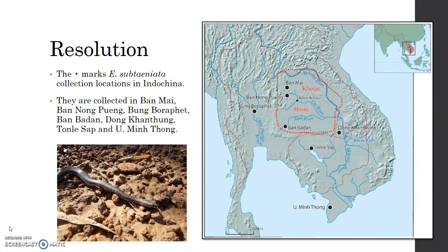The bullet points mark E. subteniata's collection locations in Indochina. They are collected at seven different locations.